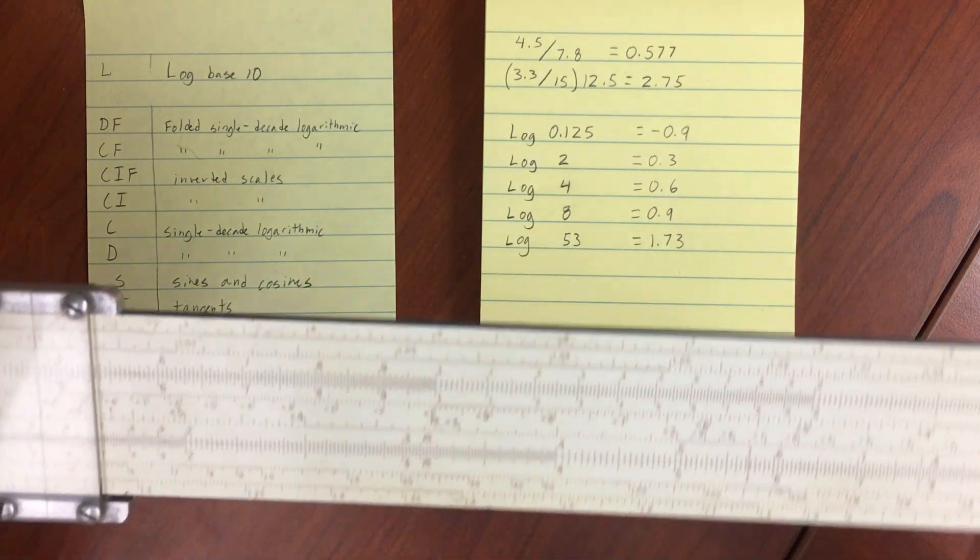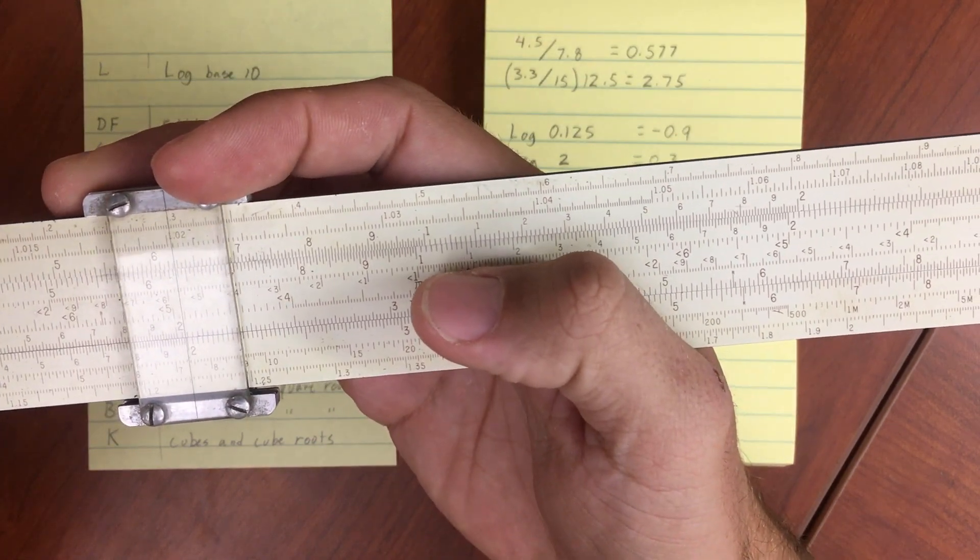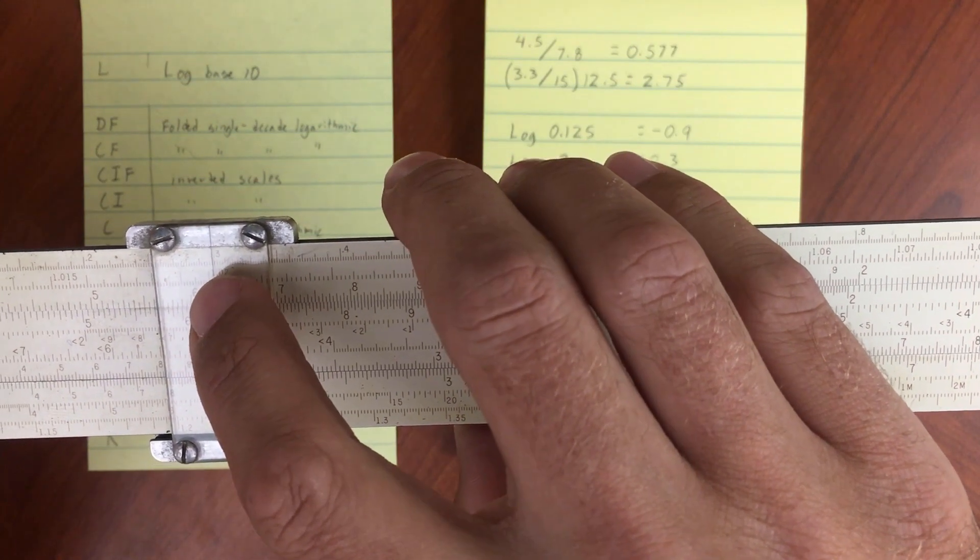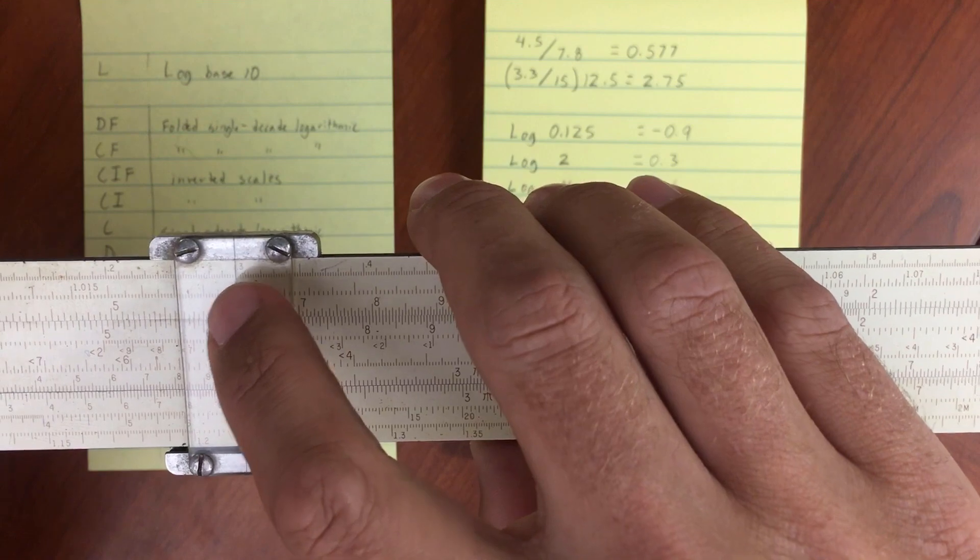So if I do log two, I'll move the cursor over to two and then read off the value on my scale up here. It's just a little bit past point three, and that's how I would expect. So ten times that would be three dB.